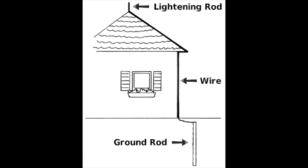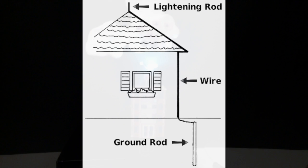As you can see by this image, once the electrons go into the lightning rod, they will make their way into the wire and into the ground rod, making no harm whatsoever to the structure.